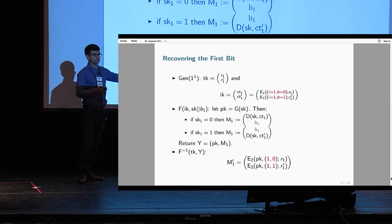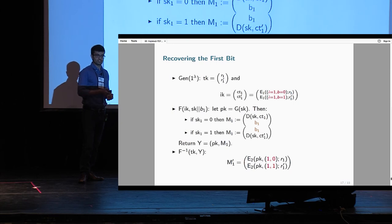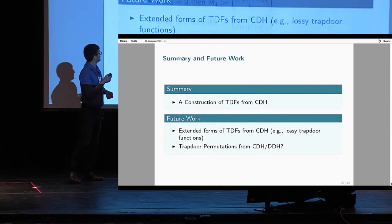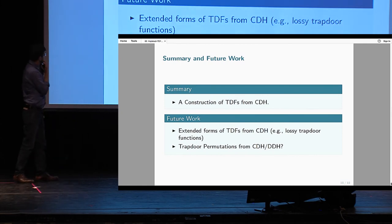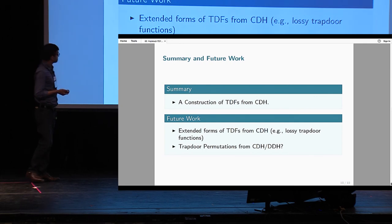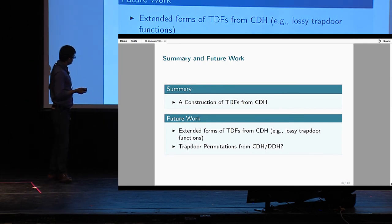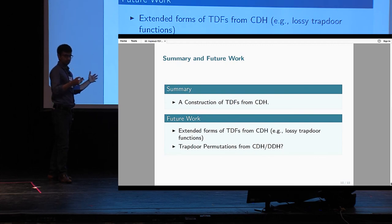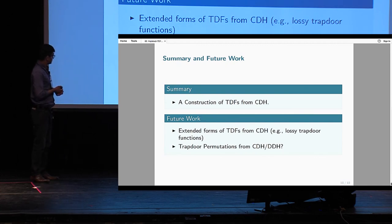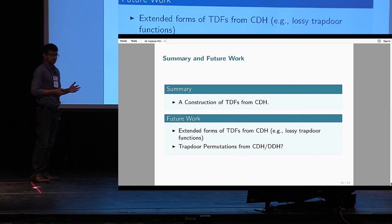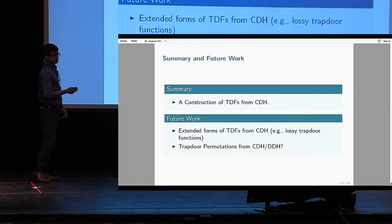To conclude, we gave a construction of trapdoor functions from the computational Diffie-Hellman assumption. As open problems, we would like to know whether we can build more advanced forms of TDFs from CDH, such as lossy trapdoor functions. A second very interesting open problem is whether we can build or separate trapdoor permutations from CDH or DDH. Thank you very much.